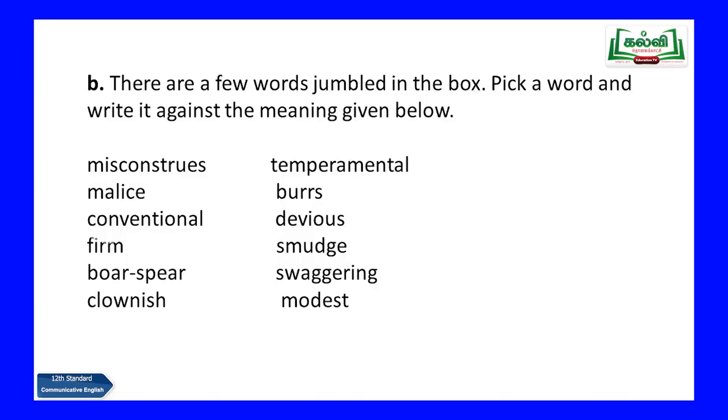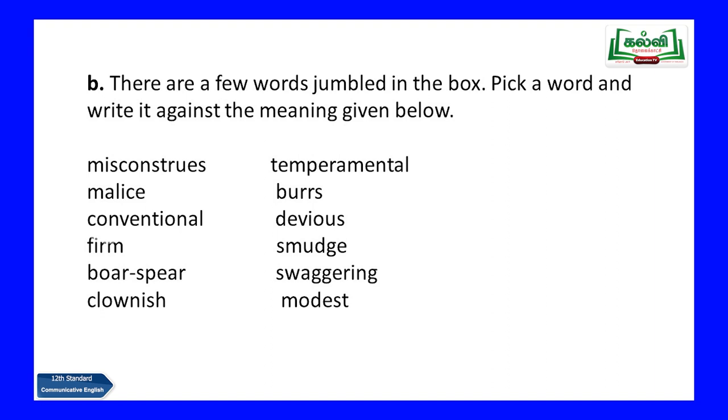Before we go into that, this is Unit 4. You have a vocabulary exercise — let us see the words and try to match them with their correct meanings. Here is a question for you. There are a few words jumbled in the box — a textual exercise. Pick a word and write it against the meaning given below. The words are: misconstrues, malice, conventional, firm, boarspear, clownish, temperamental, burrs, devious, smudge, swaggering, modest. We will have to pick the correct word and associate it with its meaning.